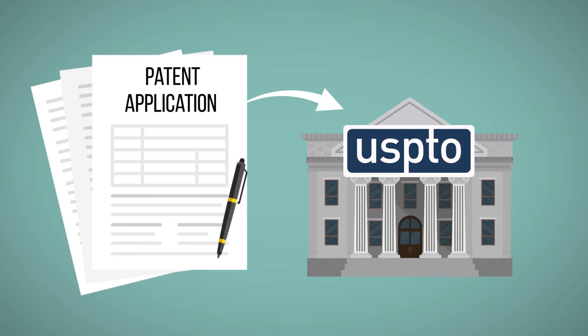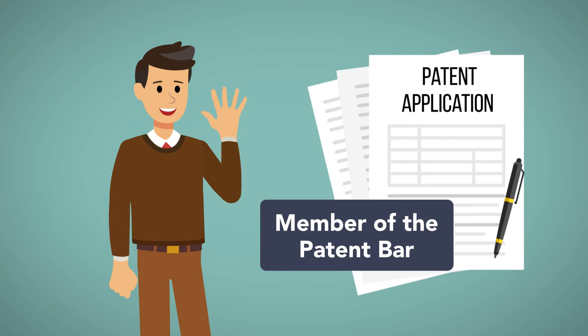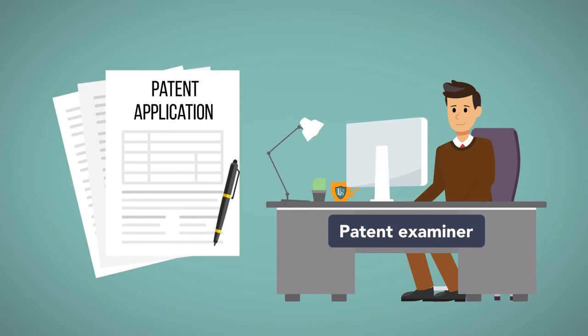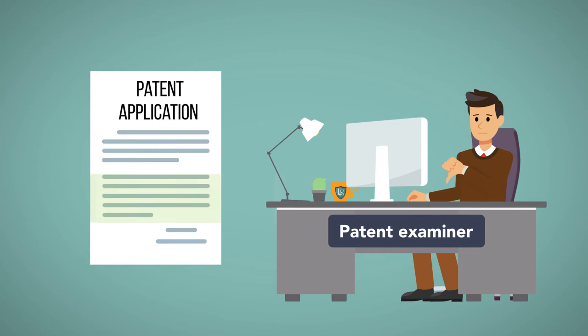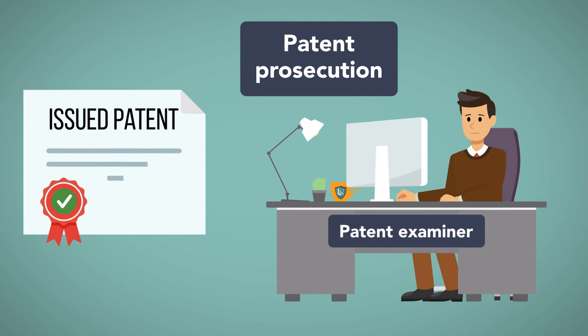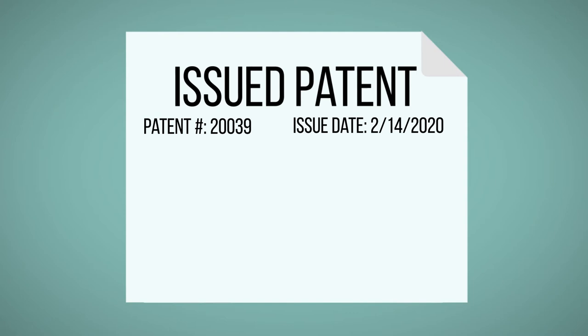To obtain a utility patent, an attorney or patent agent files a patent application with the patent office. The attorney or patent agent must be a member of the patent bar, which requires passing a highly specialized exam. The application is assigned to a patent examiner, who often rejects the initial application, requiring modifications. This process, known as patent prosecution, can take months or years before a patent finally issues.